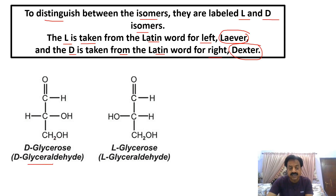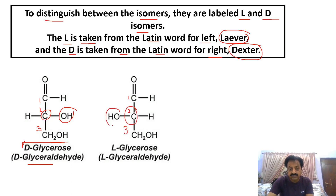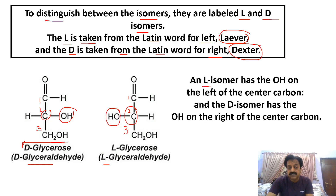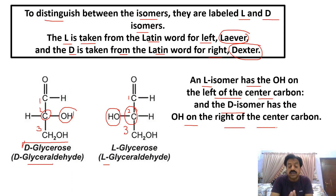Now looking at the same mirror images again: in D-glyceraldehyde — carbon 1, carbon 2, carbon 3 — the OH on the central carbon is on the right side. D stands for dextro, right side. And in its mirror image, the OH on the central carbon is on the left side, making it the L-isomer. So again: L-isomer has OH on the left of the central carbon, and D-isomer has OH on the right side of the central carbon.